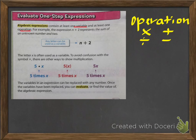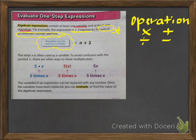The variable, of course, represents the number. For example, in the expression n plus 2, it represents the sum of an unknown number and 2. When we go back and forth between words and expressions, you want to make sure you know how to explain that. Any letter can be used as a variable — n plus 2. The letter X is often used as a variable, but to avoid confusion with the multiplication symbol X, this is the point in our chapter when you want to stop using X for multiplication.